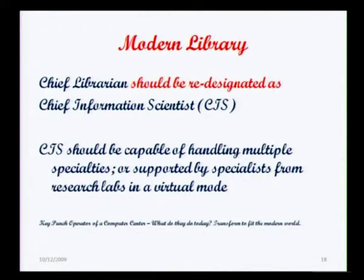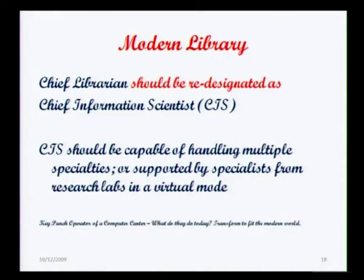In my opinion, the chief librarian of today should be redesignated as Chief Information Scientist, because he has to search for things and answer queries he has not heard of before — every time faced with a new situation. The Chief Information Scientist should be capable of handling multiple specialties, or be supported by specialists from research labs in a virtual mode. That requires meshing technology with the library of today. Just as key punch operators transformed themselves to fit the modern world, something like that has to happen for librarians becoming information scientists.